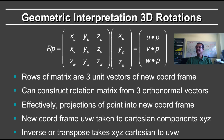To summarize the rules of a rotation matrix: the rows are three unit vectors of the new coordinate frame. We can similarly construct a rotation matrix from any three orthonormal vectors. Effectively, this is a projection of a point into the new coordinate frame, taking the u, v, and w coordinates to the Cartesian components x, y, and z.